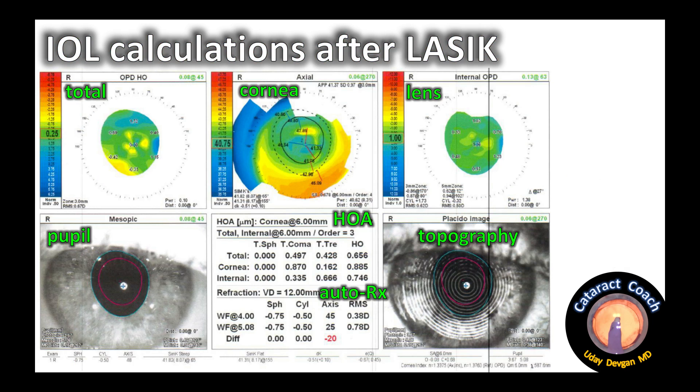This printout is from the NIDEC OPD scan. Starting with the top left box: that is essentially the refraction starting from the center of the pupil going out, and it's relatively uniform — about the same refraction measured in that central pupil zone. The top middle box is a topography of the cornea, an axial measurement, with a map and in the bottom corner the SIM K values. On the top of that box it says APP — that's the average power in the central cornea.